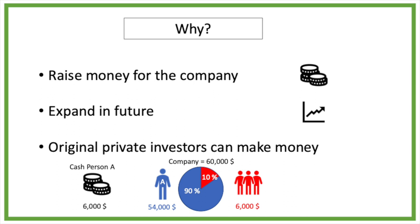So in this case no extra money is raised for the company as the value stays the same at $60,000. But person A earns $6,000 by selling part of its ownership to public investors.